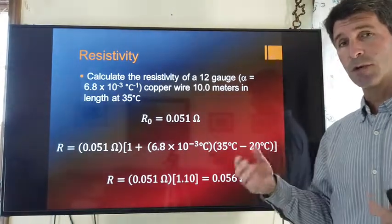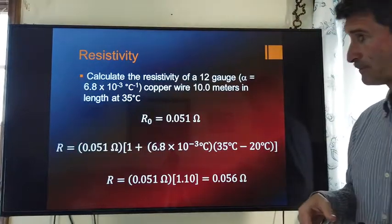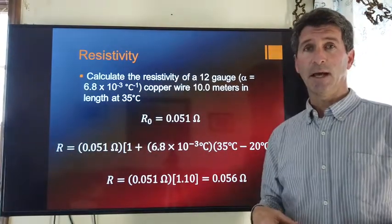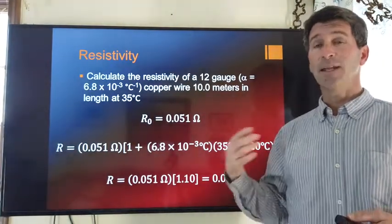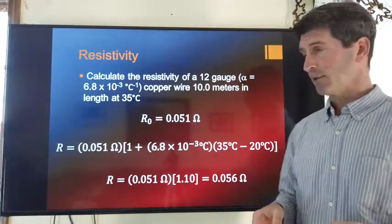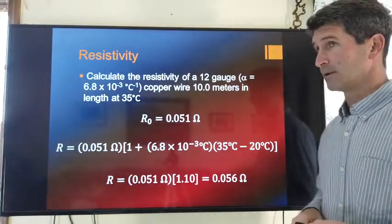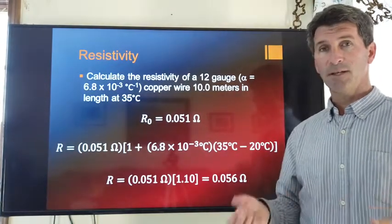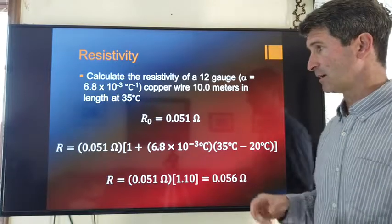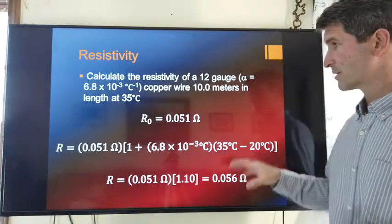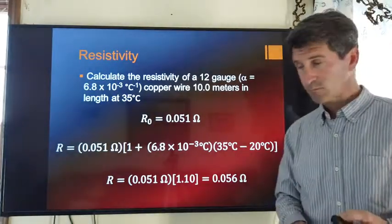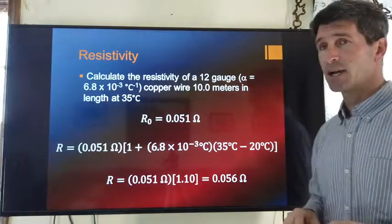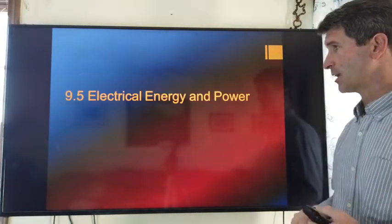This creates a problem. Once you start drawing more current through a wire, it's going to heat up. And its resistance is actually going to increase, causing it to heat up even more. And that can create a very dangerous situation where, if you reach the flash point of any material touching this wire, you can start a fire. So, again, the resistance does change as we change the temperature.